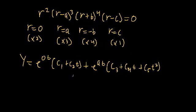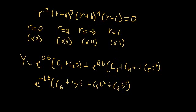Now we have to move on to this root, and we have e to the negative b t, and that gets repeated four times, so that's going to be multiplied by c6 plus c7 t plus c8 t squared plus c9 t cubed. And then finally, we're just left with the last root, so plus c10 e to the ct. And there we have it. This would be our ten linearly independent solutions to the theoretical tenth-order differential equation.